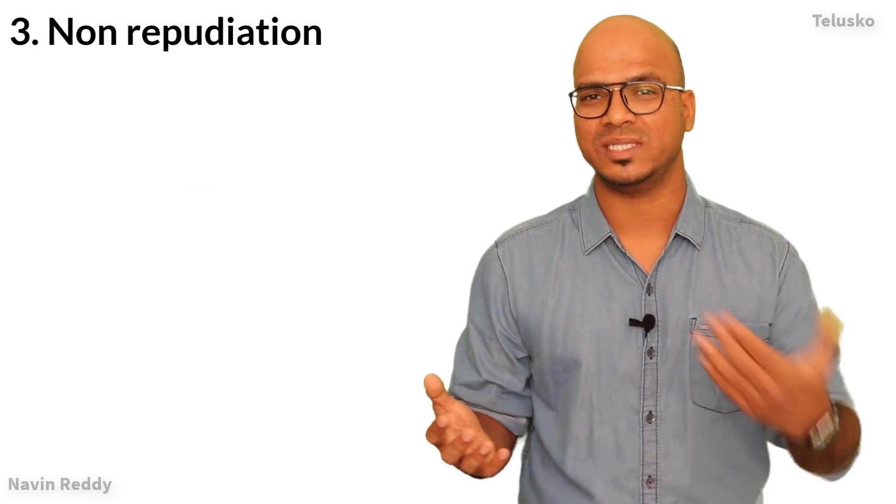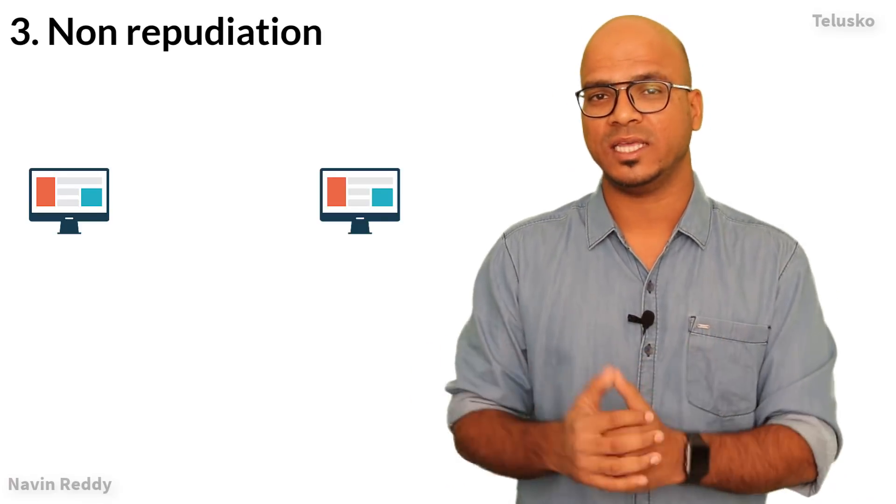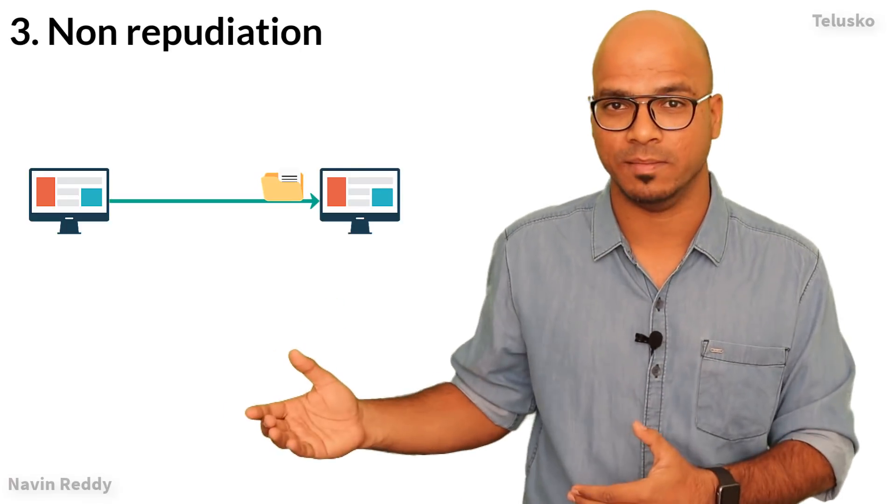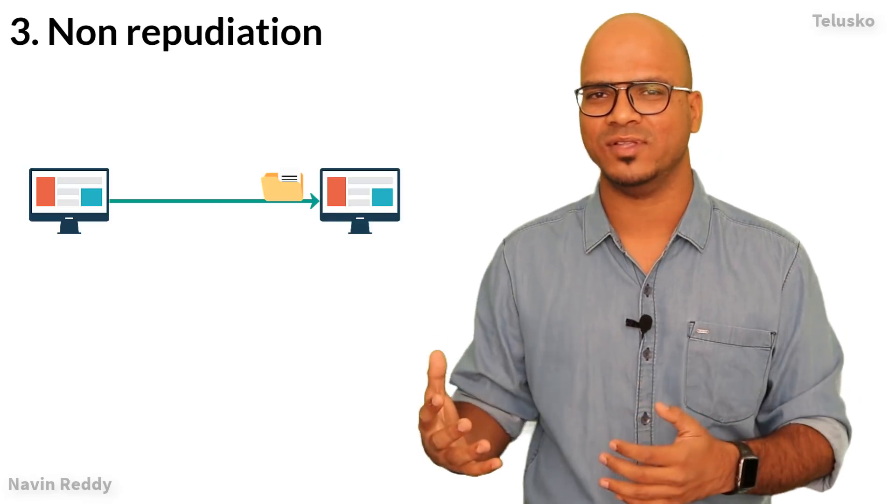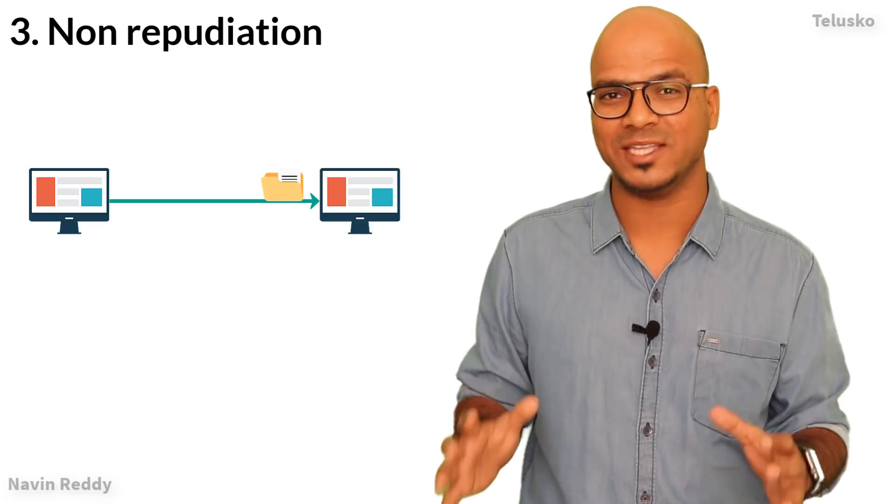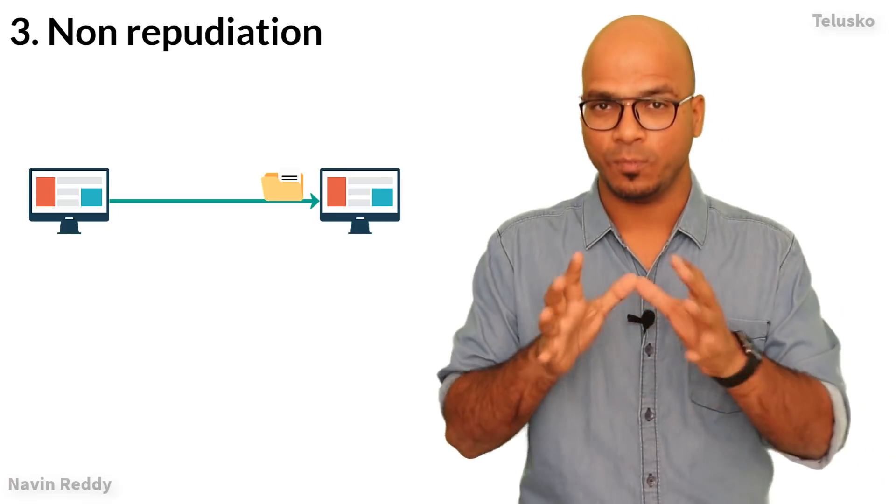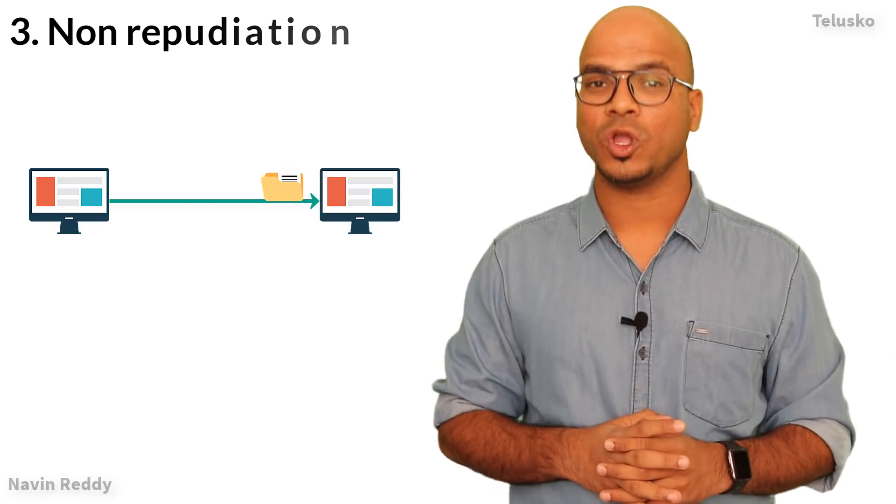The third one is non-repudiation, which simply means no one should say 'you have not done that' or 'I have not done that'. For example, if A sends a message to B saying 'hey let's meet at 6 PM', and B shows up but A is not there, after some time A will say 'hey I haven't sent you any message'. We don't want that. If A is sending a message to B, there should be proof that A has actually sent the message. The fourth one is authentication.